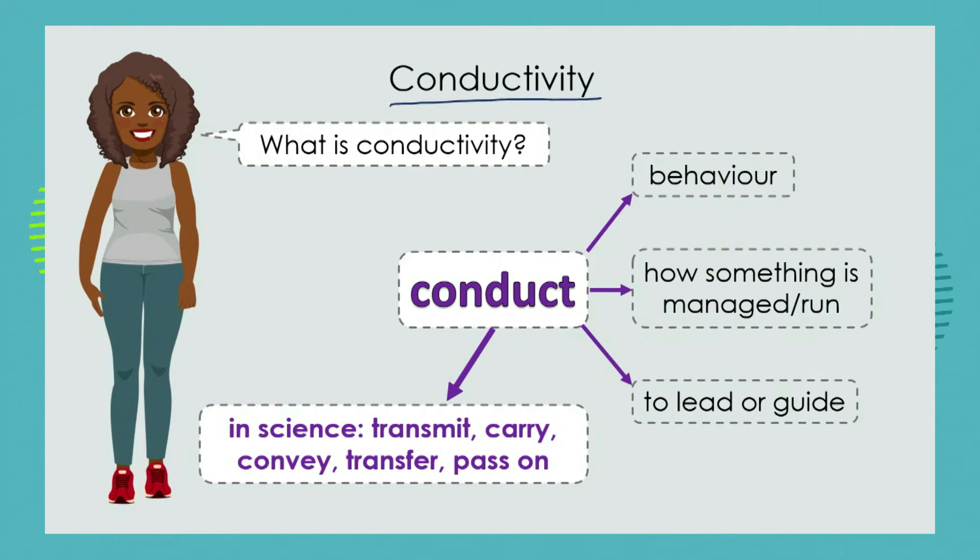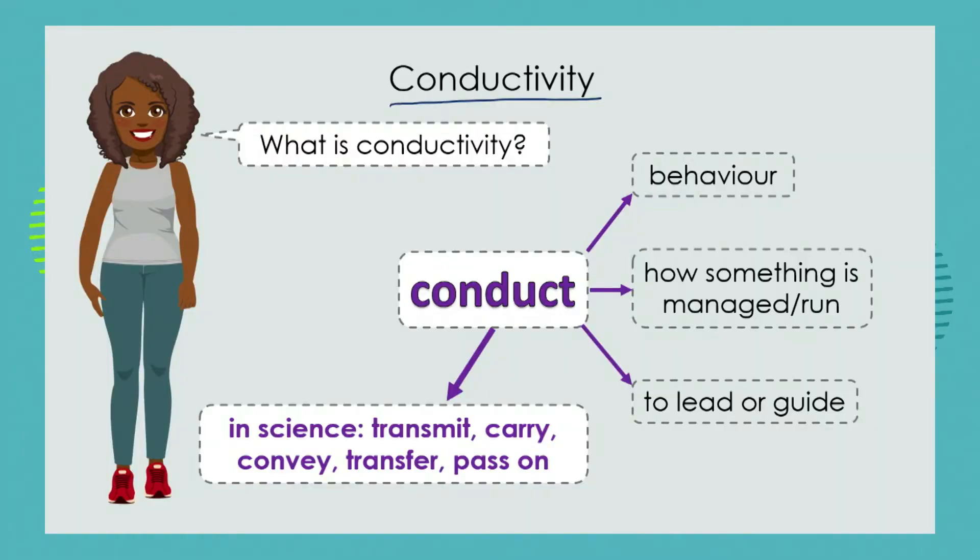So let's first unpack that English word 'conductivity' to understand what it means, because if we understand what the English word means, we'll be able to understand a little bit more about what the concept of conductivity is when we look at it from a science perspective. So what is conductivity?